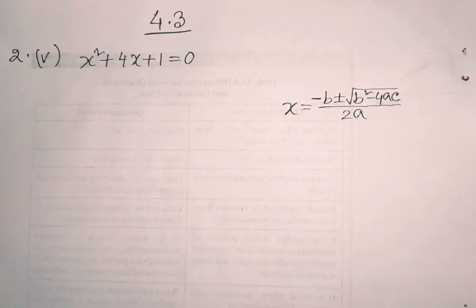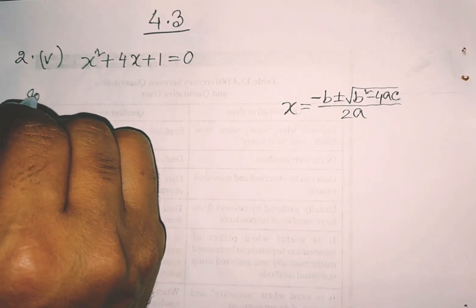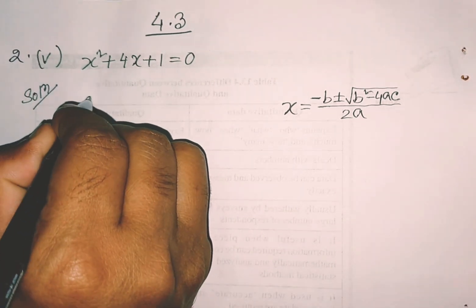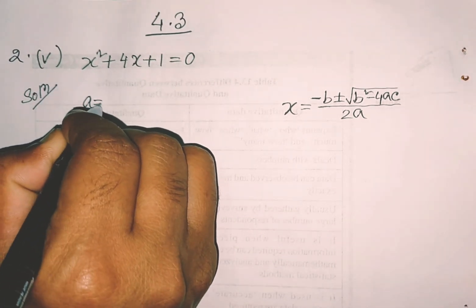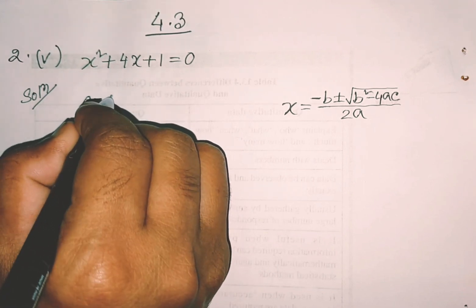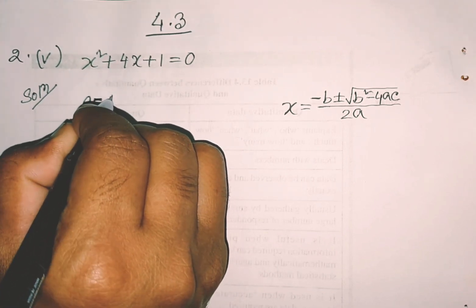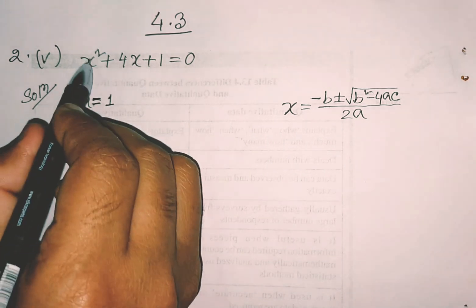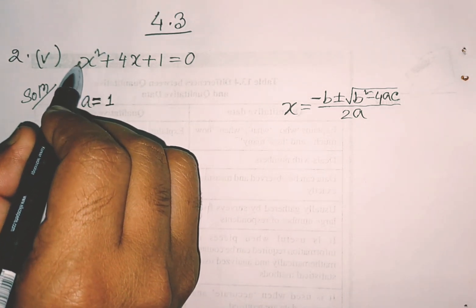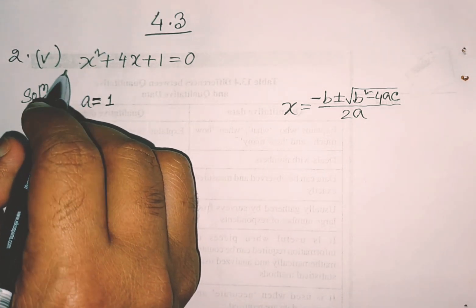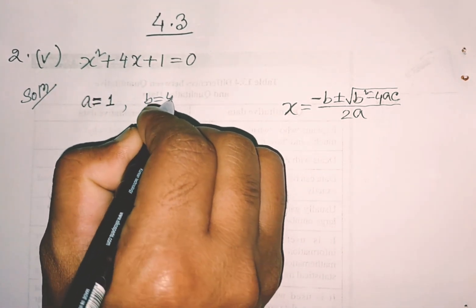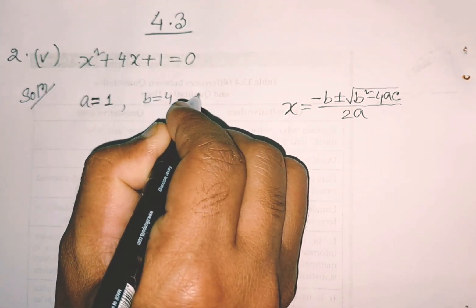So for this question, what are our values? a is equal to 1, b is equal to 4, and a (the constant) is equal to 1.